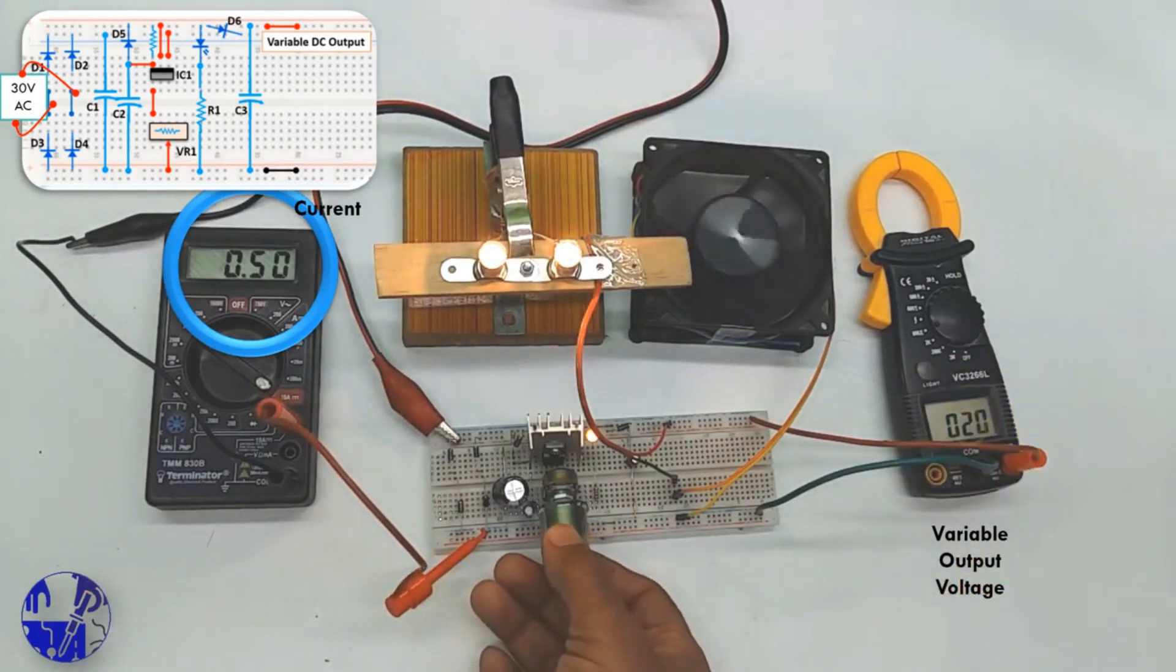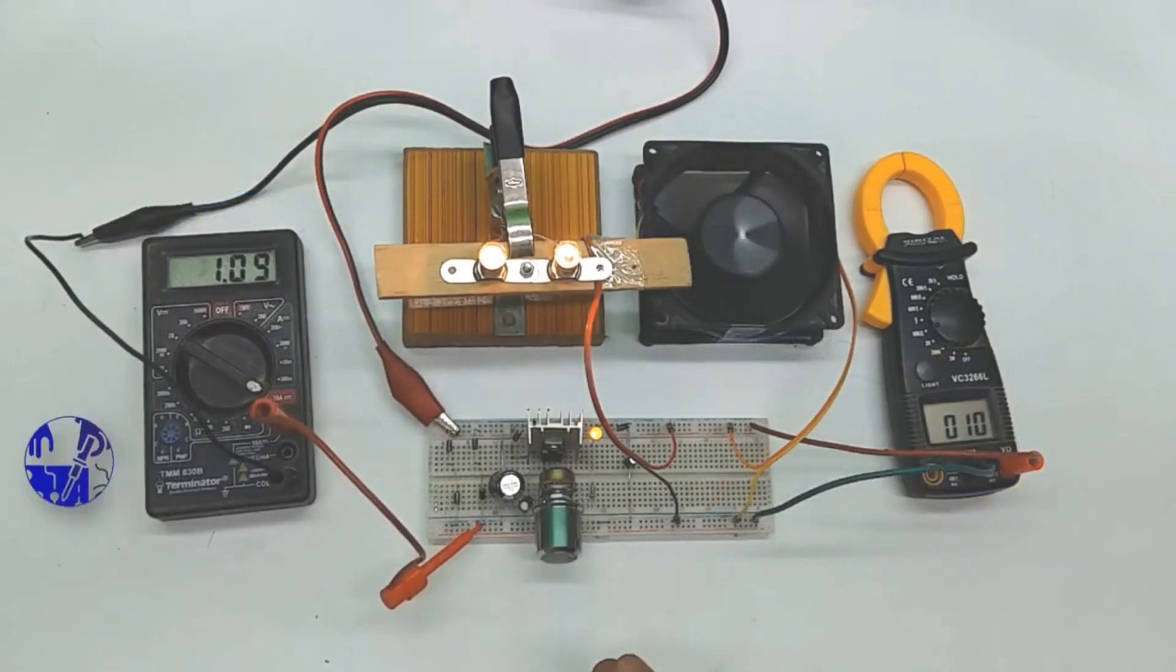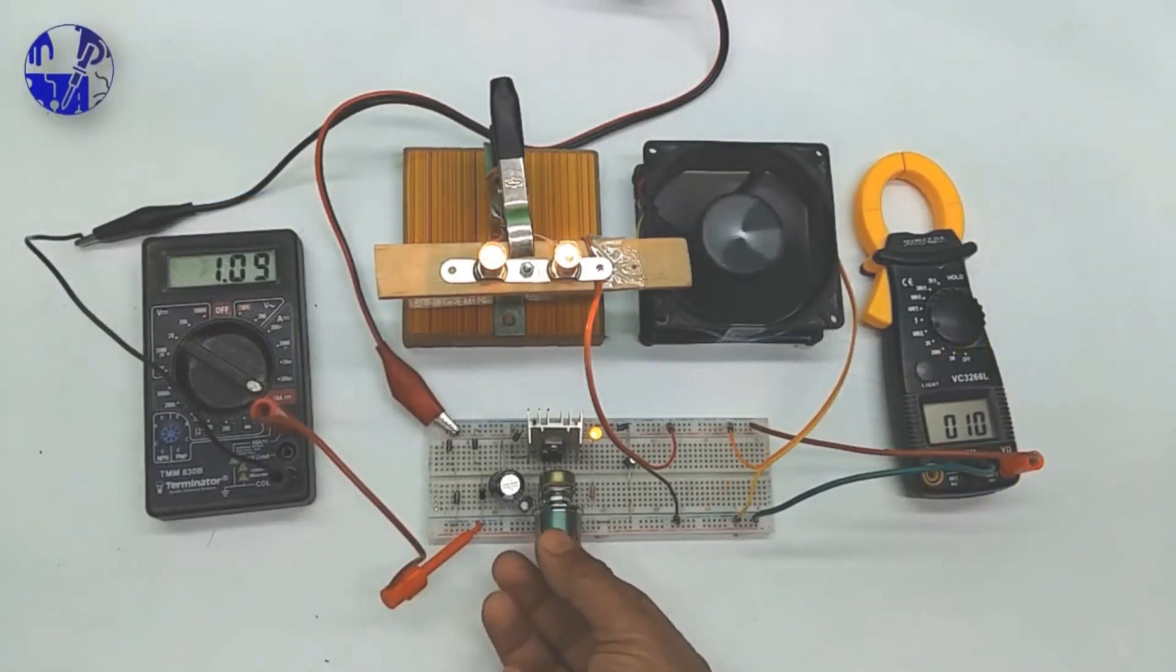The 3-terminal IC LM317 can take an input voltage of 3 to 40 volt DC and provide a fixed voltage of 1.25 to 37 volt.